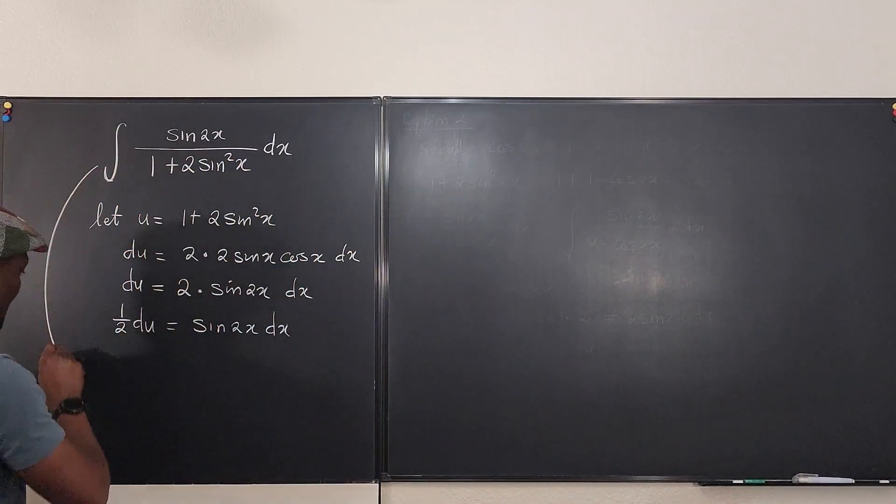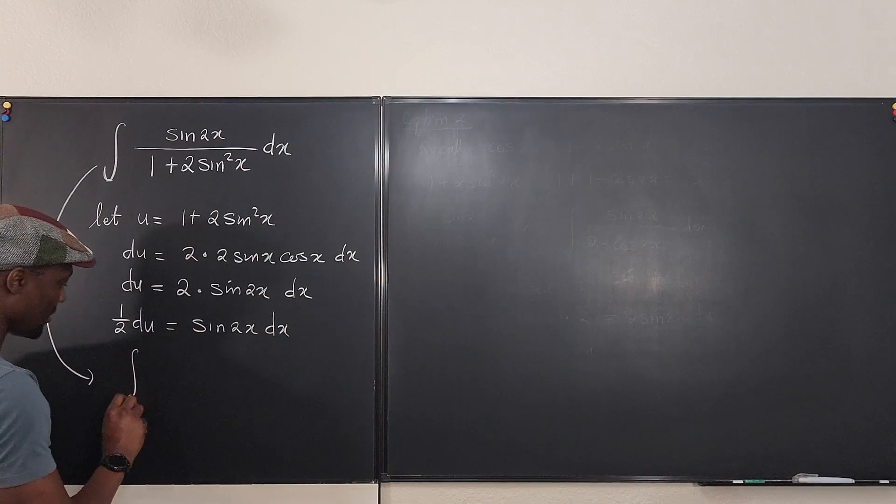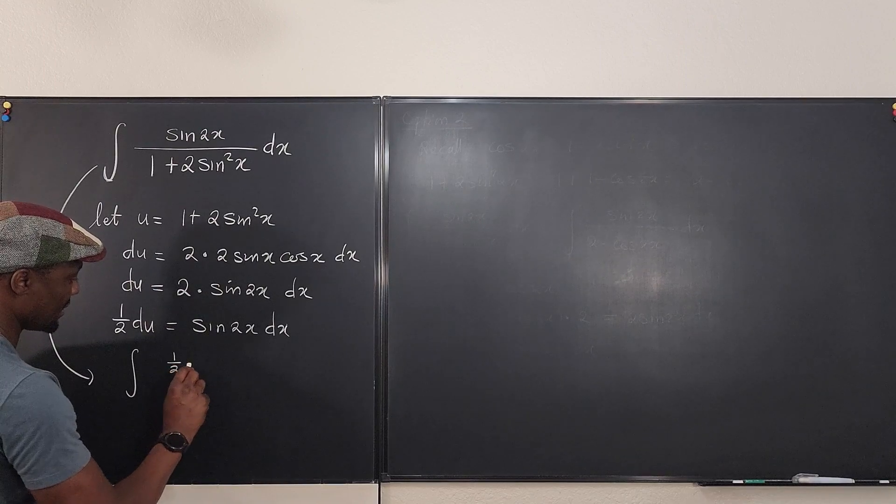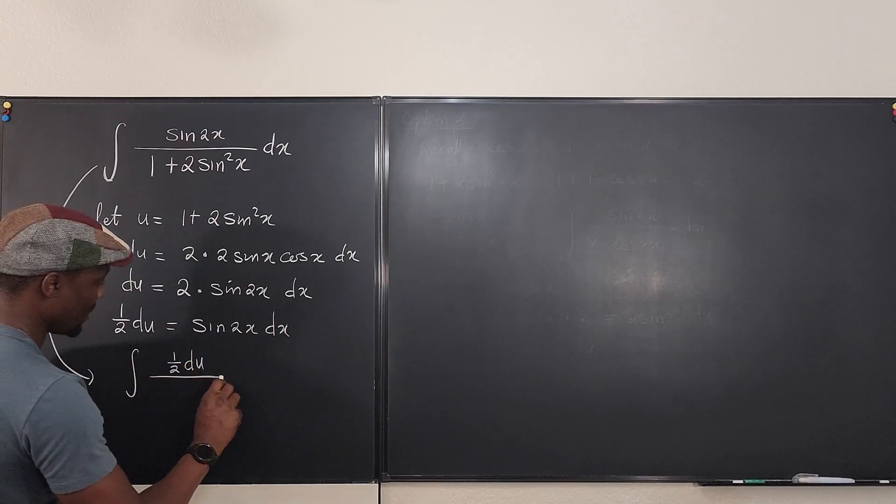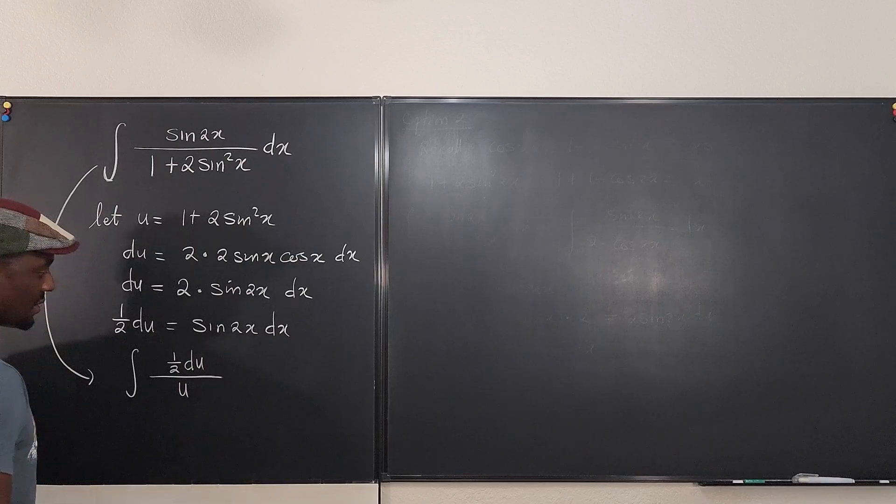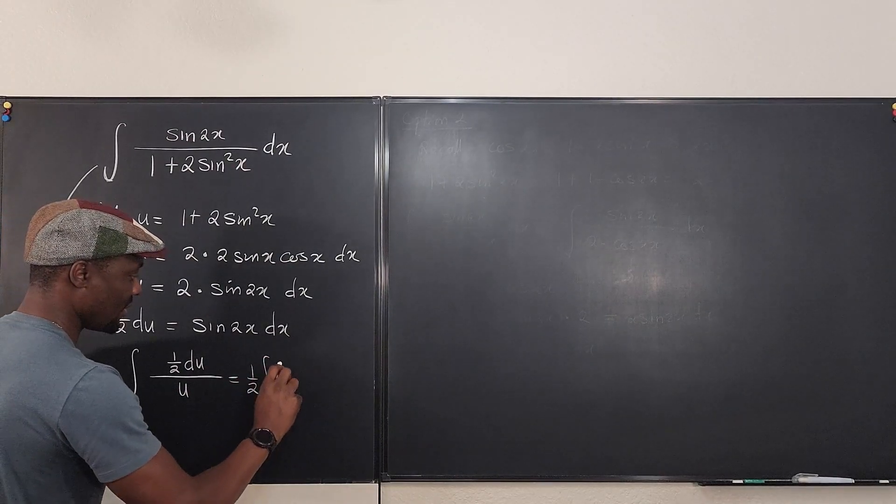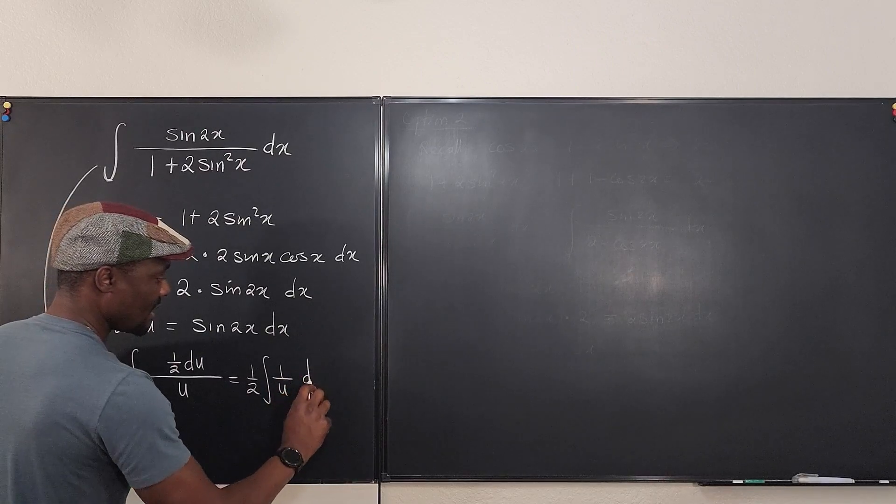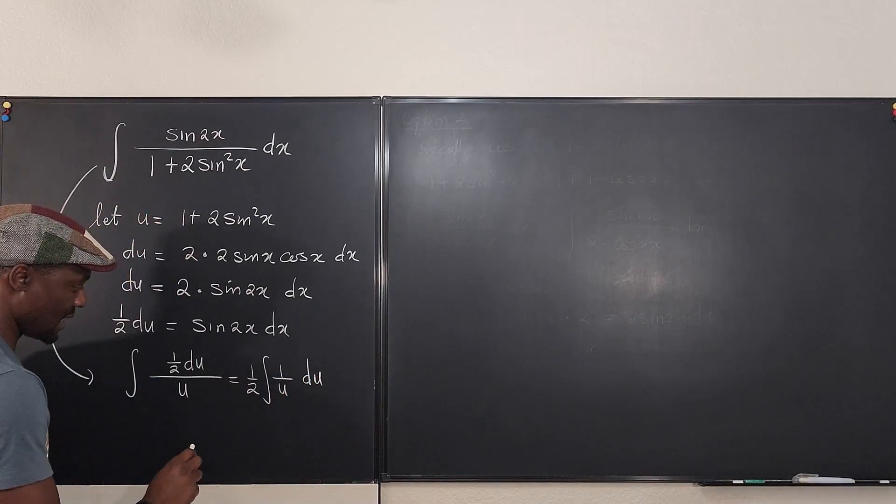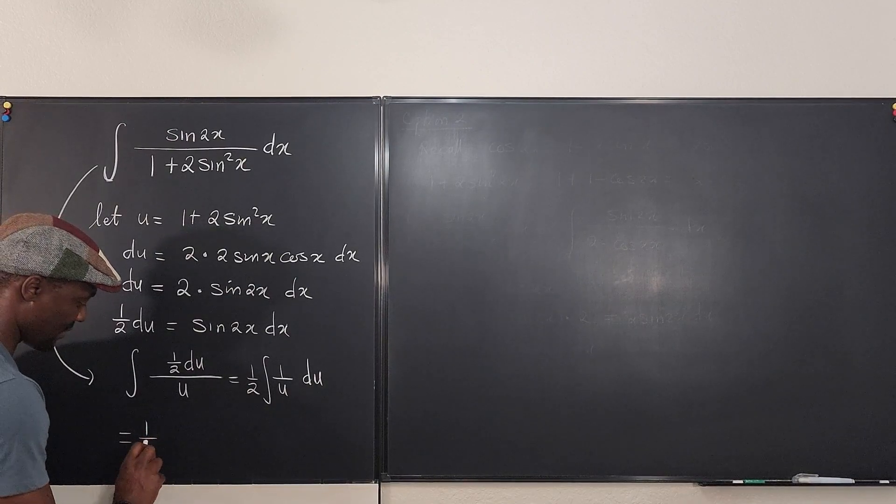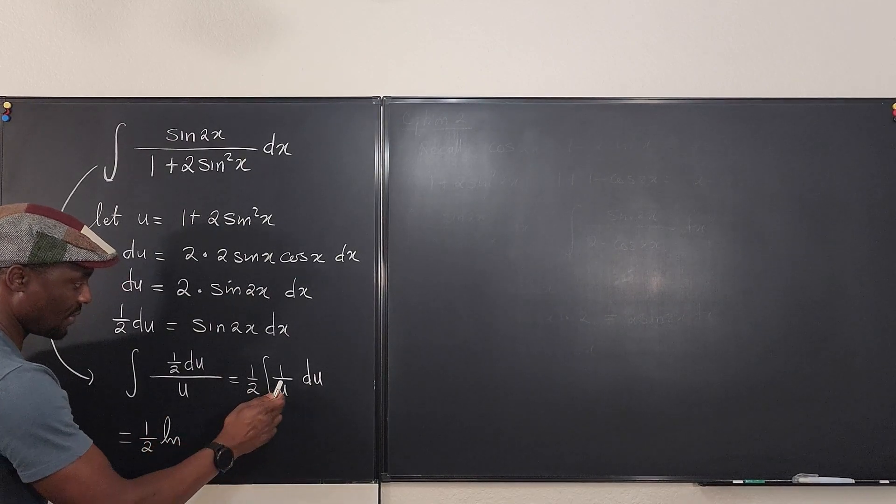So this can become the integral of half du over u. That's it. And this is the same thing as one half of the integral of one over u du. And that gives me one half of the natural log of u.